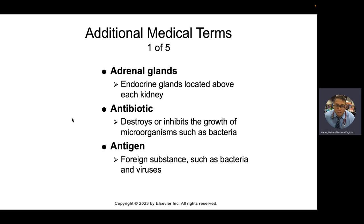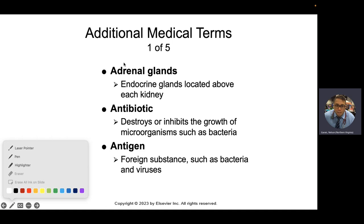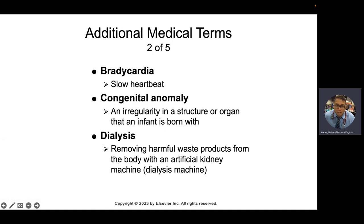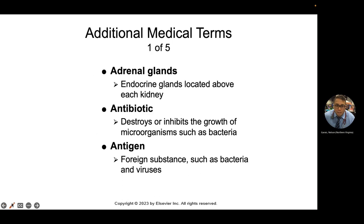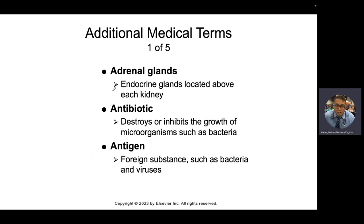Adrenal glands — if we break it down: 'ad' means above or on top of, 'ren' means kidney, and 'al' means pertaining to. So it's, of course, an endocrine gland. Antibiotic — 'anti' is the prefix that means against, 'bio' means life. It's drugs that are against the life of bacteria.